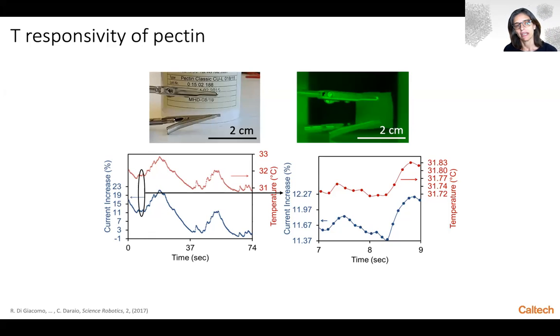From here we speculate that pectin, without additional variations on the composition, can detect on the order of 10 millikelvin with a very simple electrical circuit like you see here, just two crocodile electrodes connected to a multi-meter reading device.